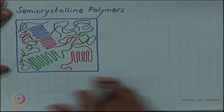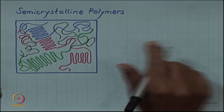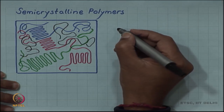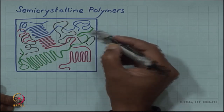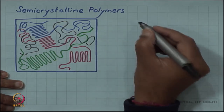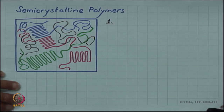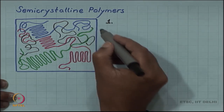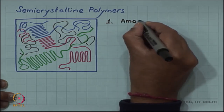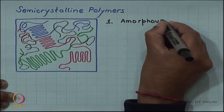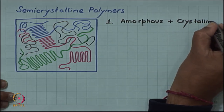Here, schematically, a two-dimensional schematic of a semi-crystalline polymer is shown. What you should note here is that the crystals form by folding of the chain — you can see this blue chain or the red chain are folded. There are both amorphous regions and crystalline regions.